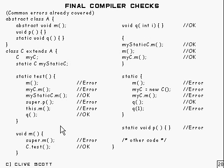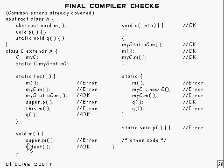Of course, that one has no parameters. Right, void M, super.M — that's an error, because super.M is going to direct it up here, and that method's abstract, so that's an error.